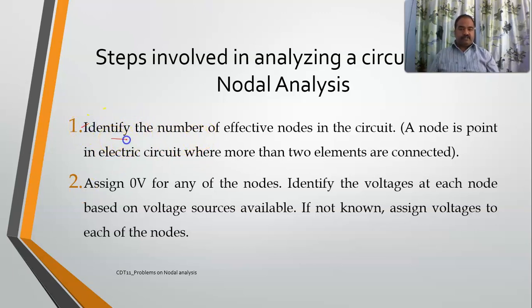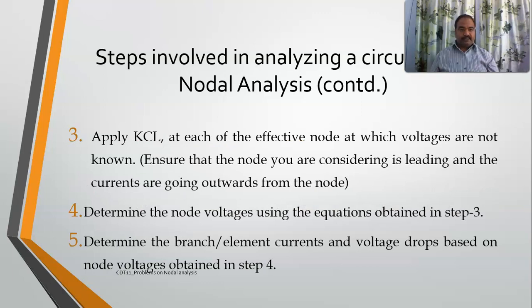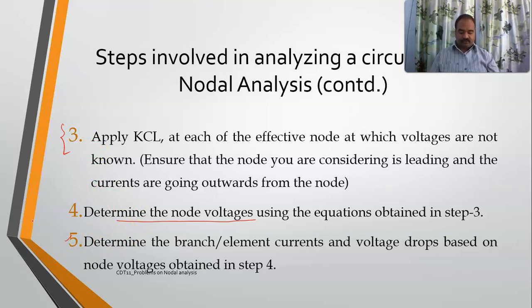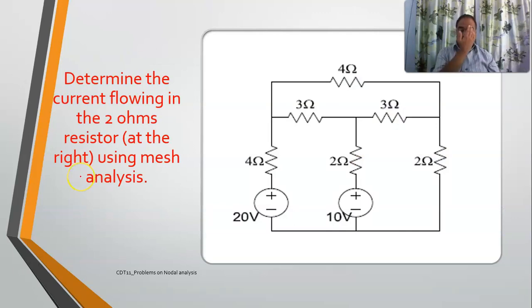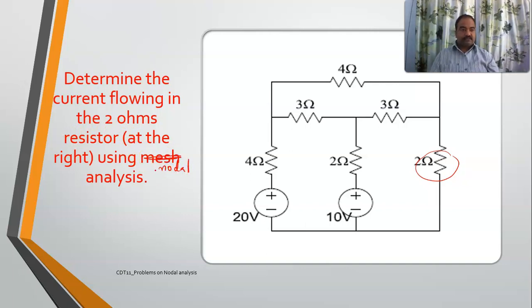The first step, as already mentioned, we need to identify the number of nodes in the circuit and then assign them voltages. One node, which we call the reference node, we will assign it 0 volts. For the rest of the nodes, if there are voltage sources assigned then we will identify the voltage; if not, we will assign them voltages. Then at each of these effective nodes we will apply KCL to determine the node voltages and finally determine the branch currents. I will start with this question which we have already tried during mesh analysis — the same circuit, now we will analyze it using nodal analysis.